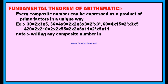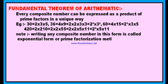Note: writing any composite number in this form is called exponential form or prime factorization method. You wrote 30 as 2 into 3 into 5, 36 as 2 square into 3 square, 60 as 2 square into 3 into 5, and 420 as 2 square into 5 into 11. All these numbers can be written as the product of prime numbers. This type of writing is called exponential form, and the method is called prime factorization method.